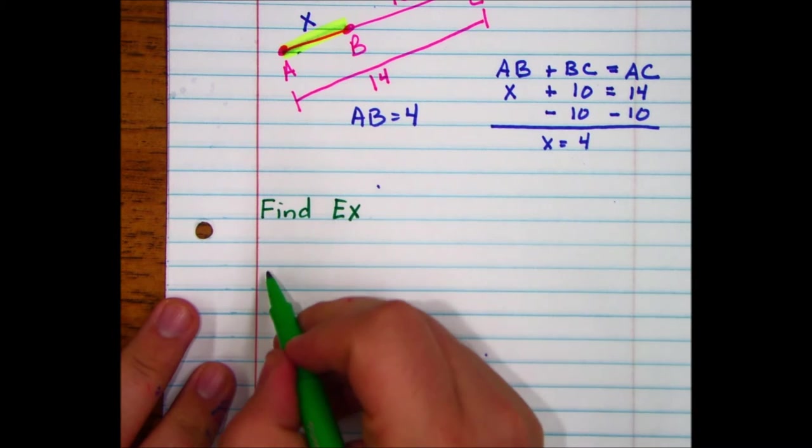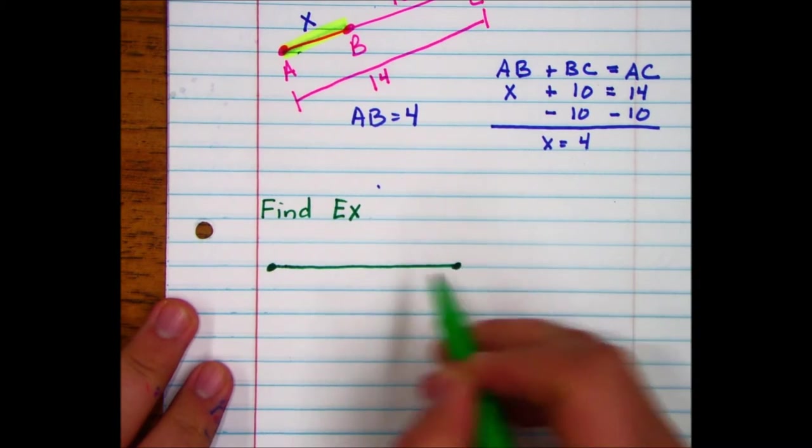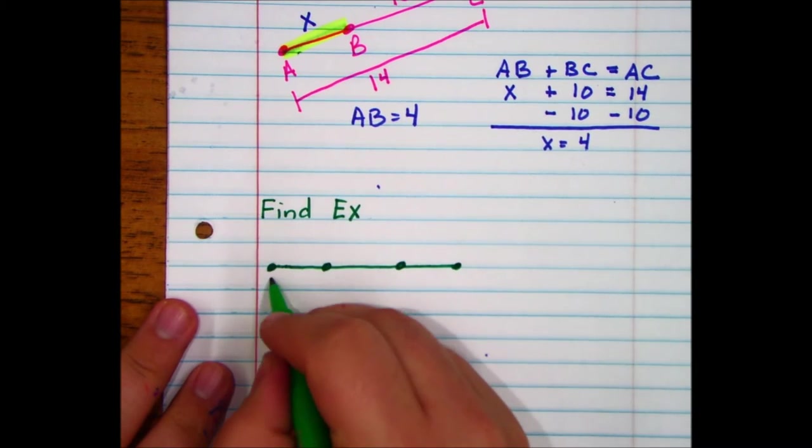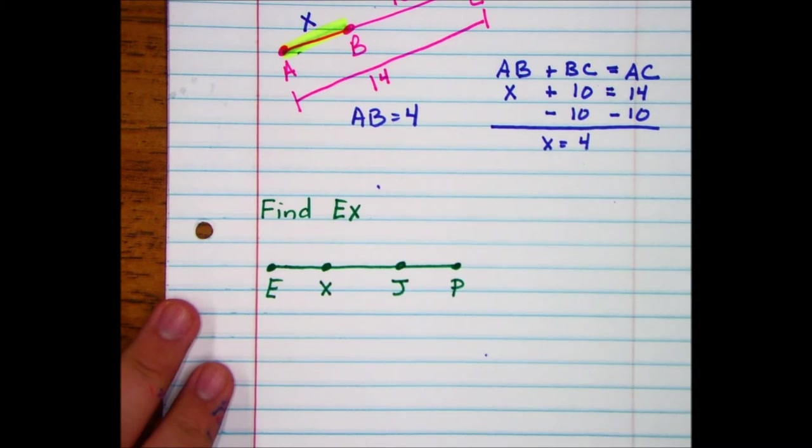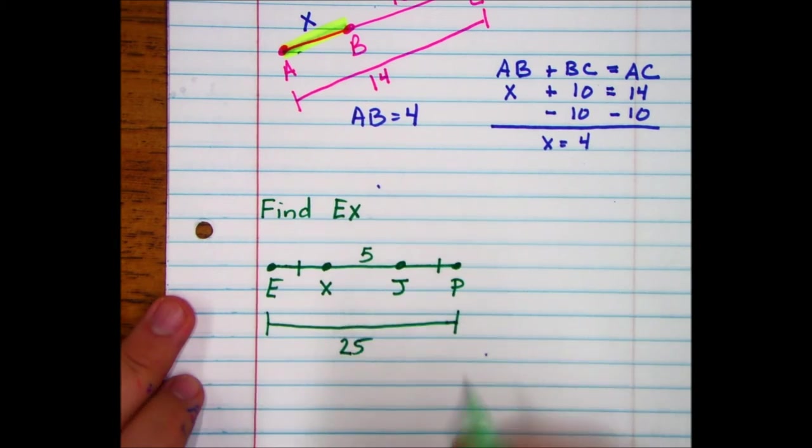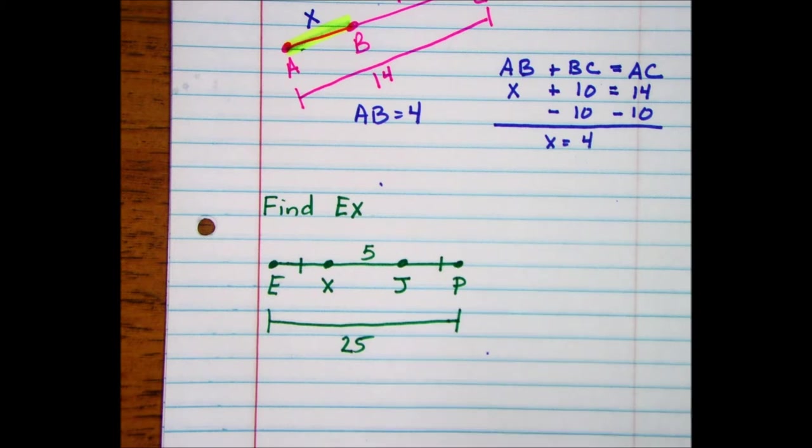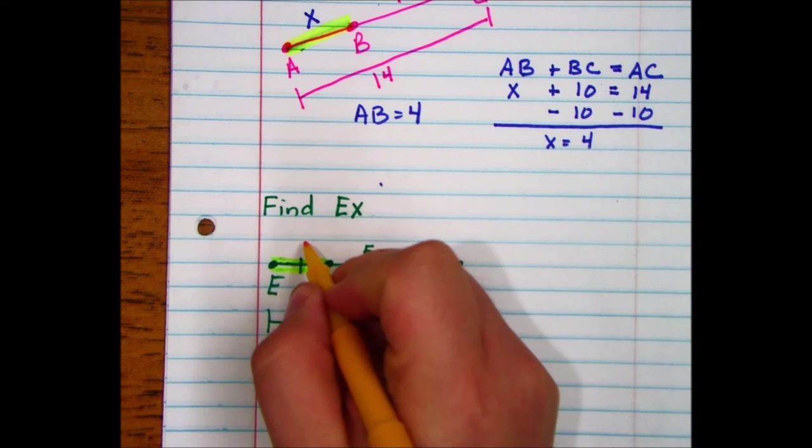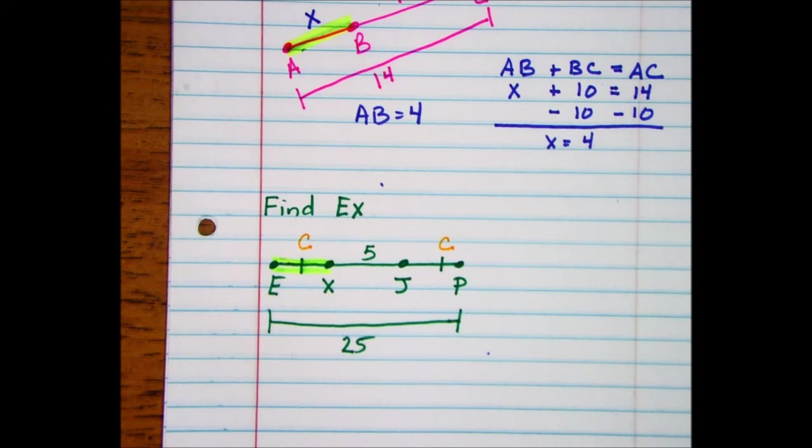Now I'm finding EX this time. And once again, I want to direct your attention to what we're finding. We're finding EX, which once again is a smaller section of an entire line segment. Now I also want to direct your attention that EX is congruent to JP. So we're going to have to denote both as some variable, and we're just going to call it x. It does not matter which variable you use, but since they're congruent, I'm going to call them x.